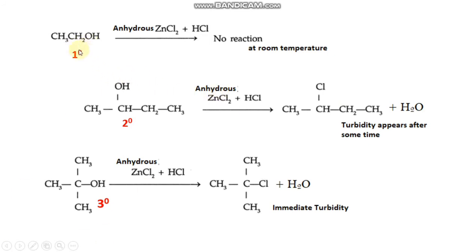This is a primary alcohol: CH₃CH₂OH. It does not undergo reaction with Lucas reagent at room temperature. This is a secondary alcohol, butan-2-ol. It will react with anhydrous zinc chloride and HCl, that is Lucas reagent, to give 2-chlorobutane. That 2-chlorobutane appears in the form of turbidity after some time.